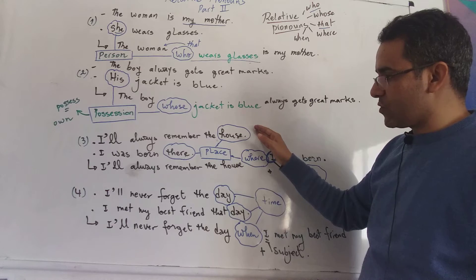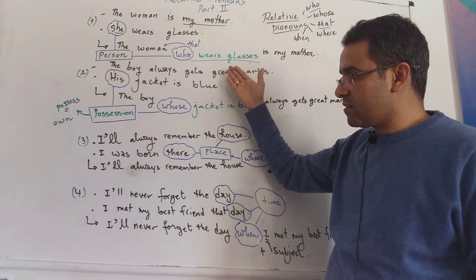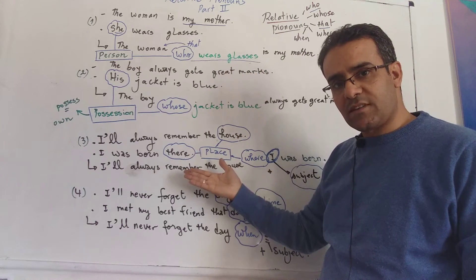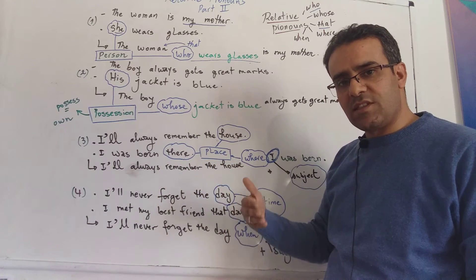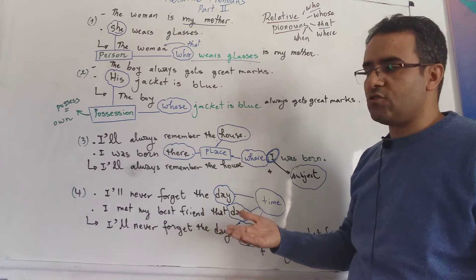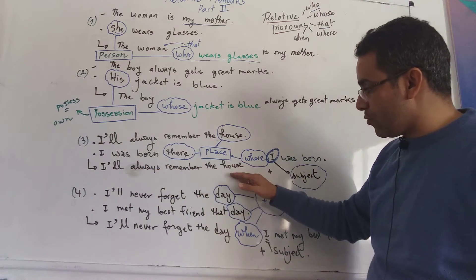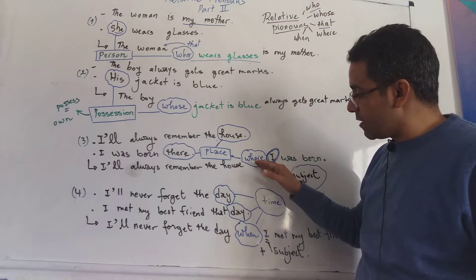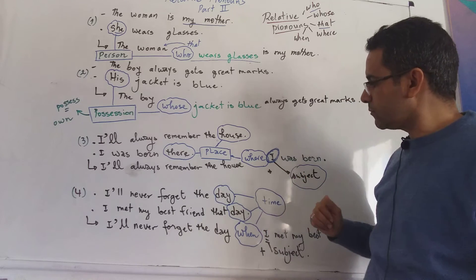I'll always remember the house. I was born there. The same thing as above. House, there, that's the same thing, the same place, which means that we have repeated the same thing two times, which is not, again, a good thing to do using language. So we can say, I'll always remember the house where I was born. So this where helps us to avoid repetition and redundancy.